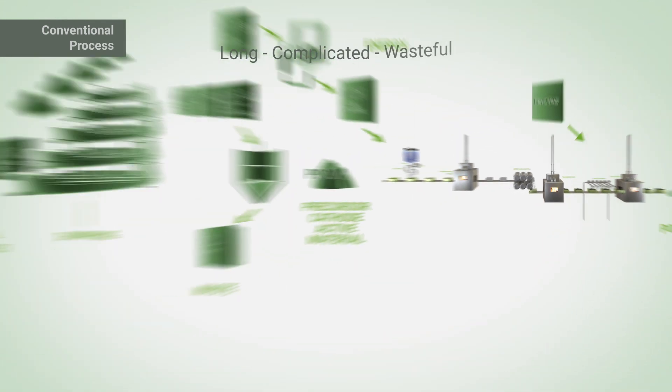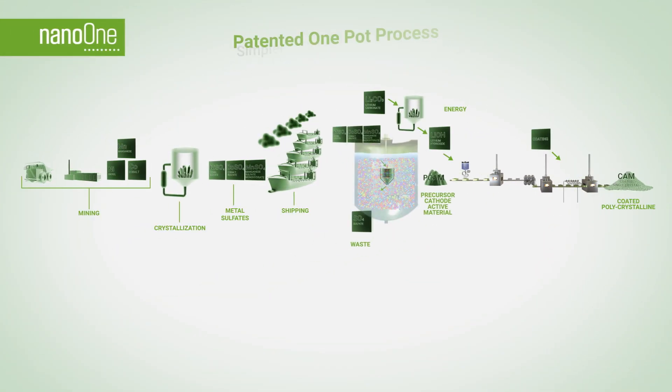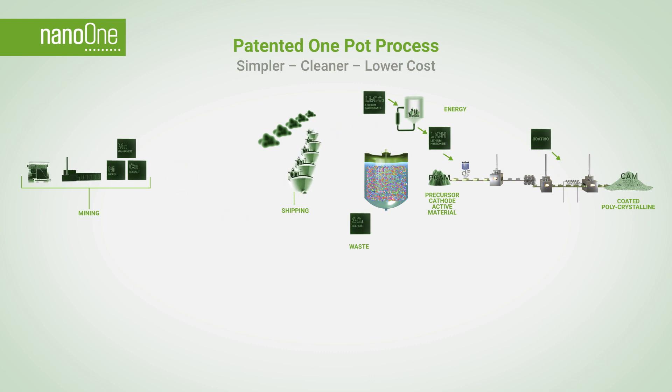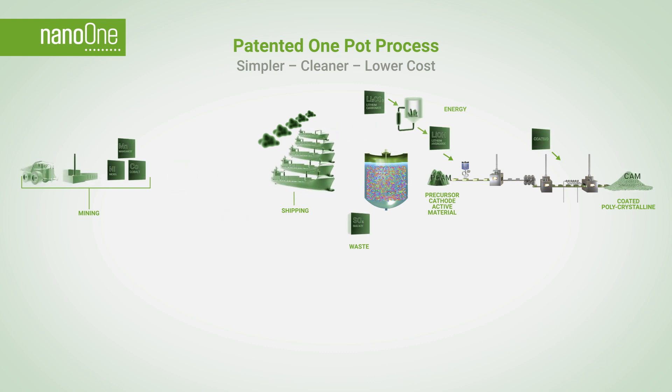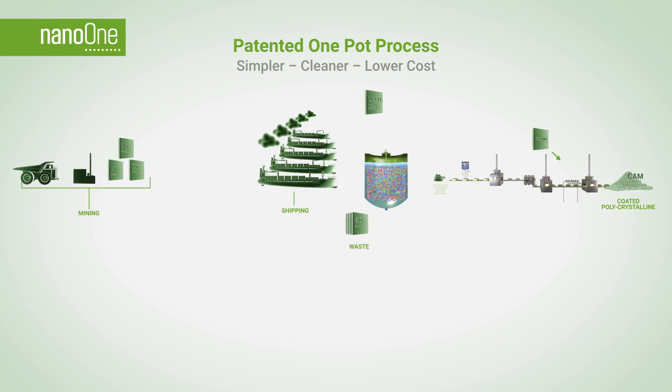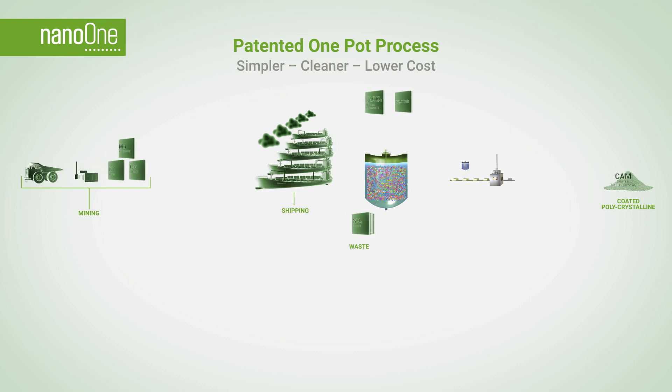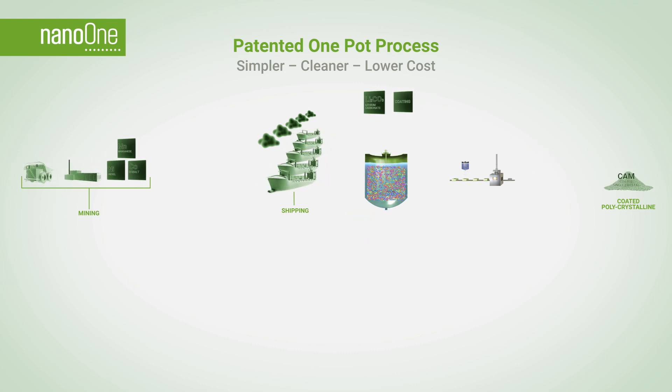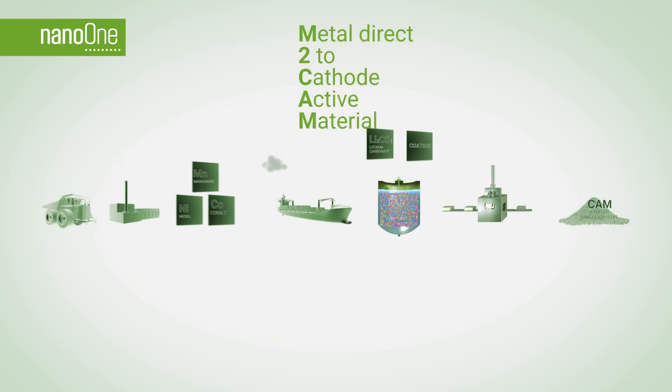Nano One has a simpler way. Our patented one-pot process eliminates the cost of converting metals to sulfates, lithium to hydroxide, PCAM, and the coating step. There is no sulfate waste stream nor the need to transport it around the world. We call it M2CAM.